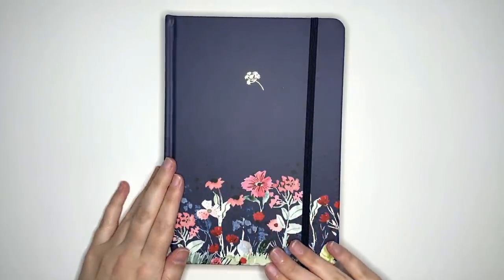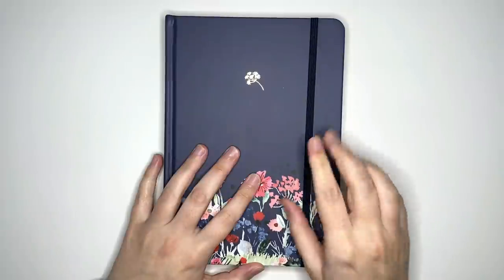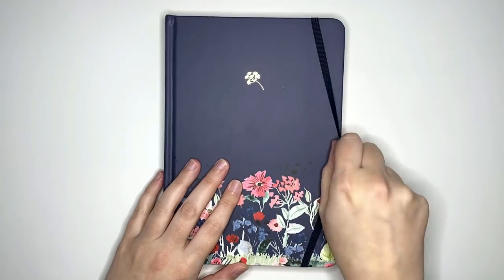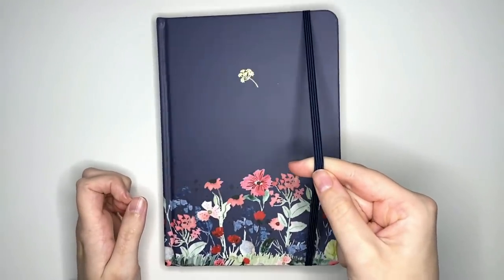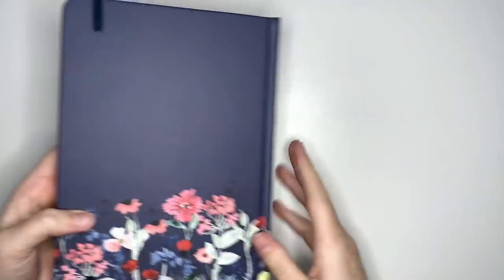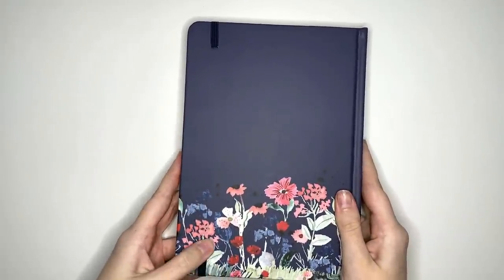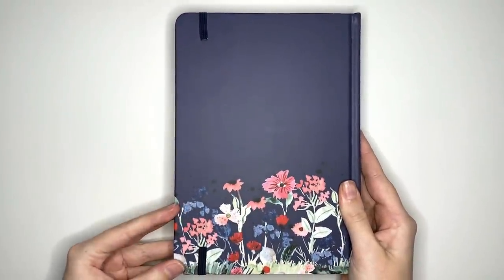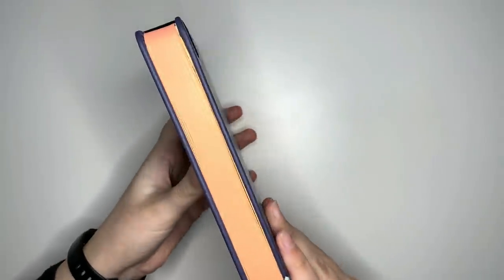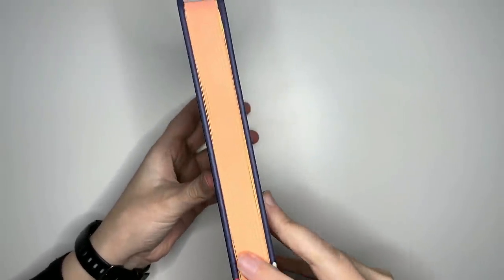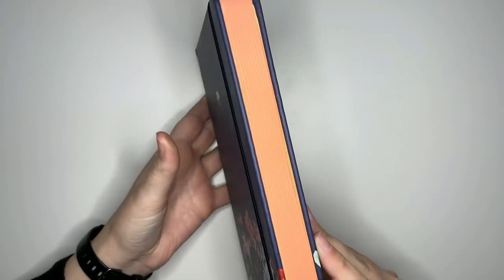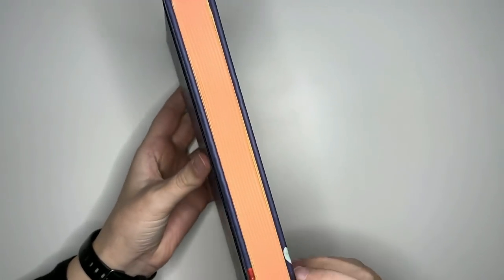This is a faux leather cover, or vegan leather. We have a good, sturdy elastic closure. It's not too stretchy. And we can see that it is nicely secured to the back here. That floral pattern continues over the back. And something interesting, you can see along the side here, I wouldn't really call it gilding, because it's not shiny, but it is pink along the edges.